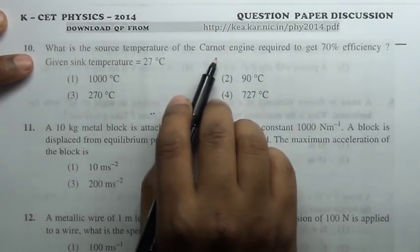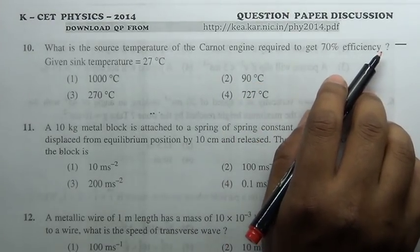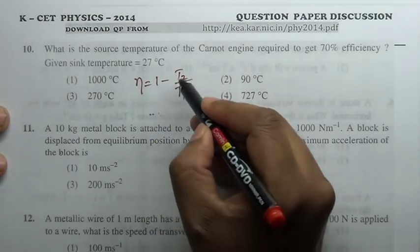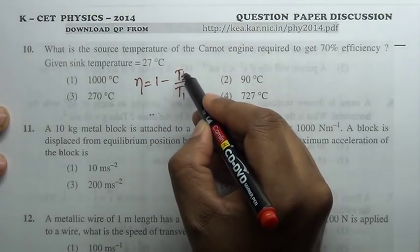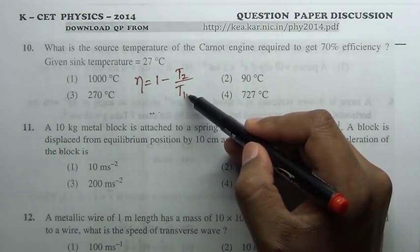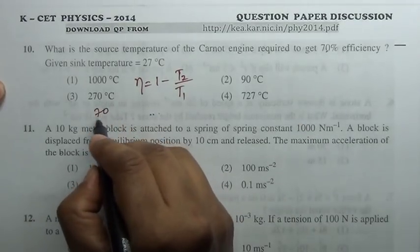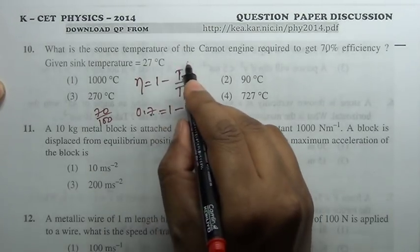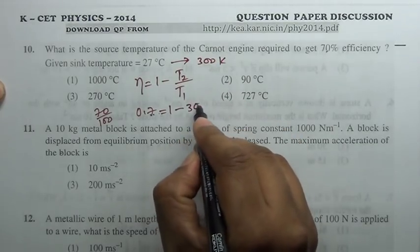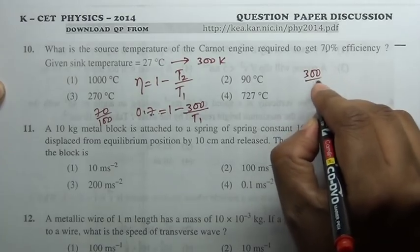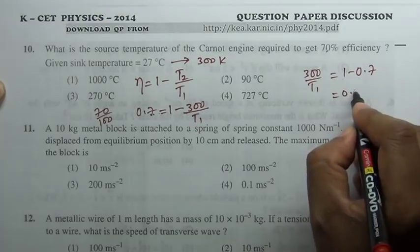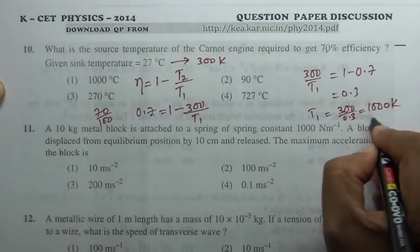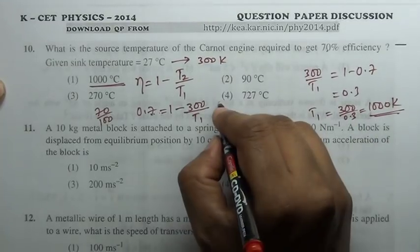What is the source temperature of Carnot cycle engine required to get 70 percent efficiency, given sink temperature is 27 degree Celsius? Efficiency equal to 1 minus T2 by T1. Since it is capital T, this is in absolute temperature. T2 is temperature of sink, T1 is temperature of source. Efficiency is 70 percent, 0.7 equal to 1 minus T2—T2 is 273 plus 27, equivalent to 300 kelvin—so it is 300 by T1. Therefore T1 is 300 by 0.3 equal to 1000 kelvin, which is 727 Celsius.